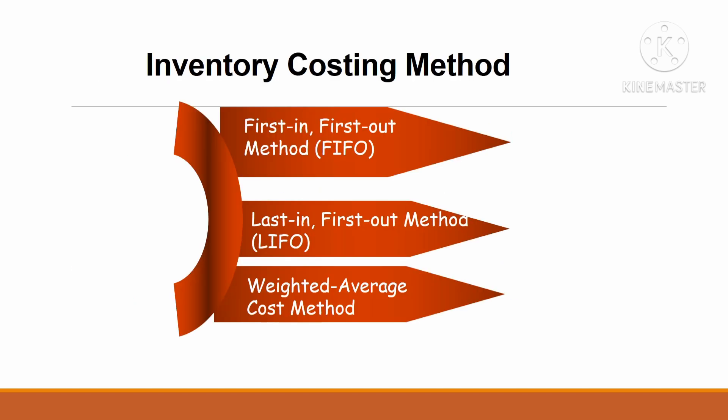Now we look at inventory costing methods. There are three inventory costing methods: number one, First-In First-Out method, known as FIFO; number two, Last-In First-Out method, known as LIFO; and number three, the Weighted Average Cost method.